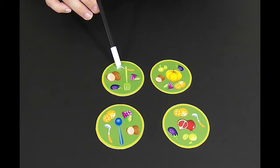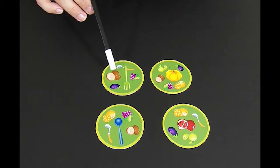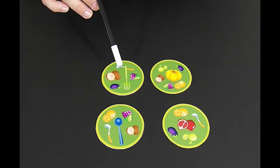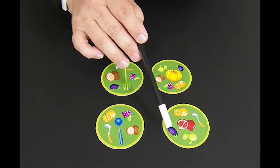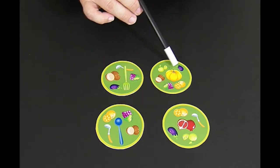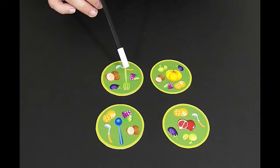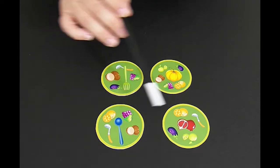Number seven is the spoon. Number eight is a potato. If you look at it, it almost looks like a number eight. Number nine is the eggplant. If you look very closely, there's a number nine drawn on the eggplant. And number ten is the grapes, because there's ten different grapes.